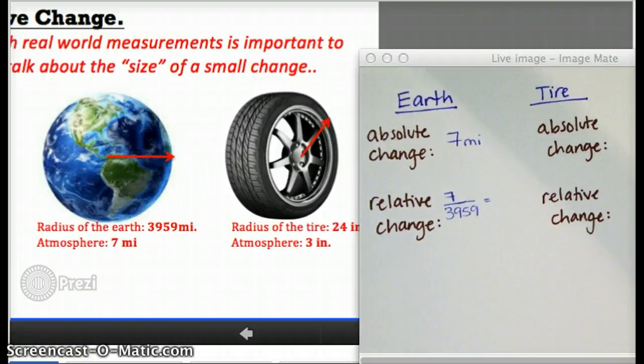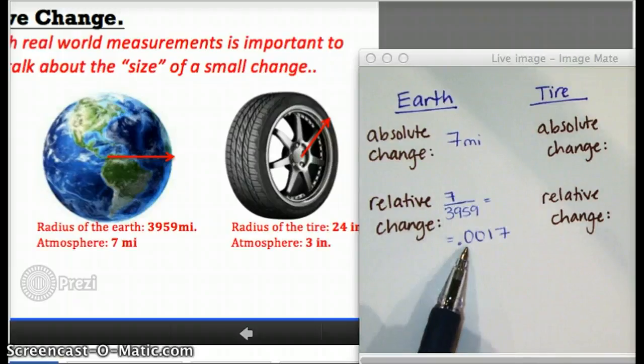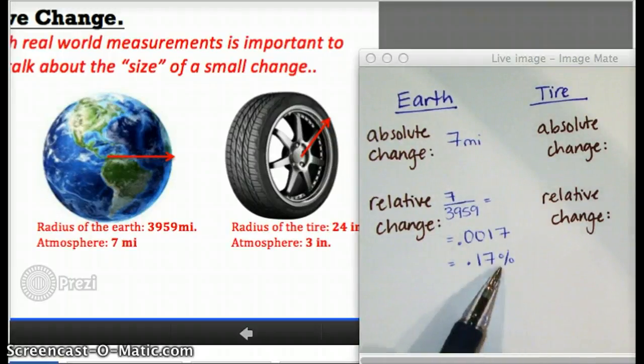In this case, that would mean dividing seven divided by 3959, which comes out to a decimal of 0.0017, or 0.17%. That's a truly tiny amount of change.